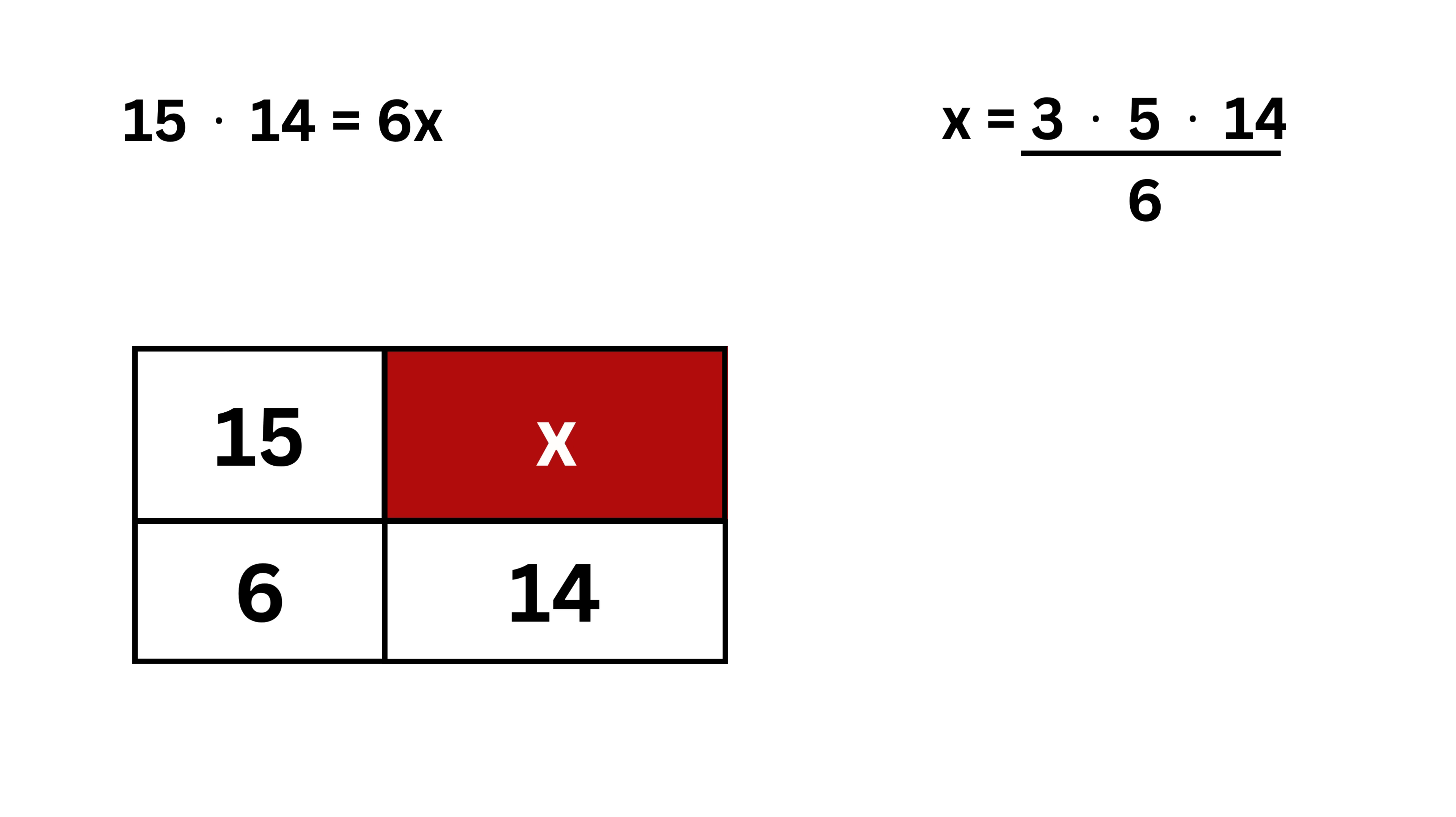This 15 is 3 times 5, and 14 is 2 times 7. Also, 6 is 2 times 3. So both 2 and 3 get cancelled out, and we are left with 5 times 7, which means X equals 35. And that's it. The area of this portion is 35 square units.